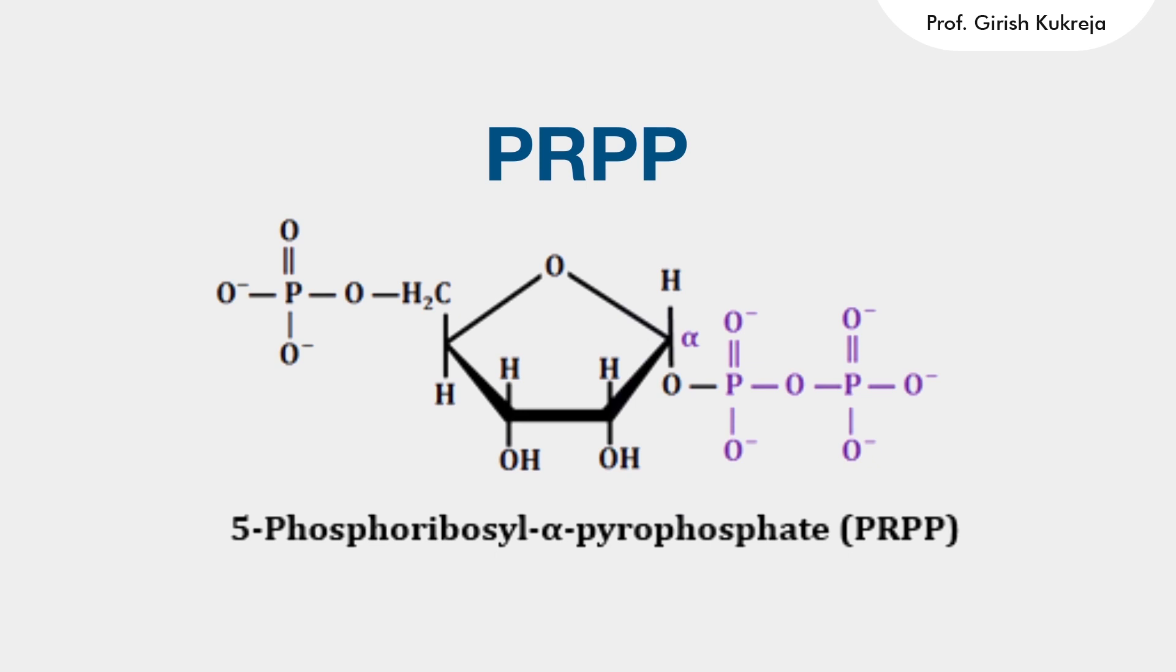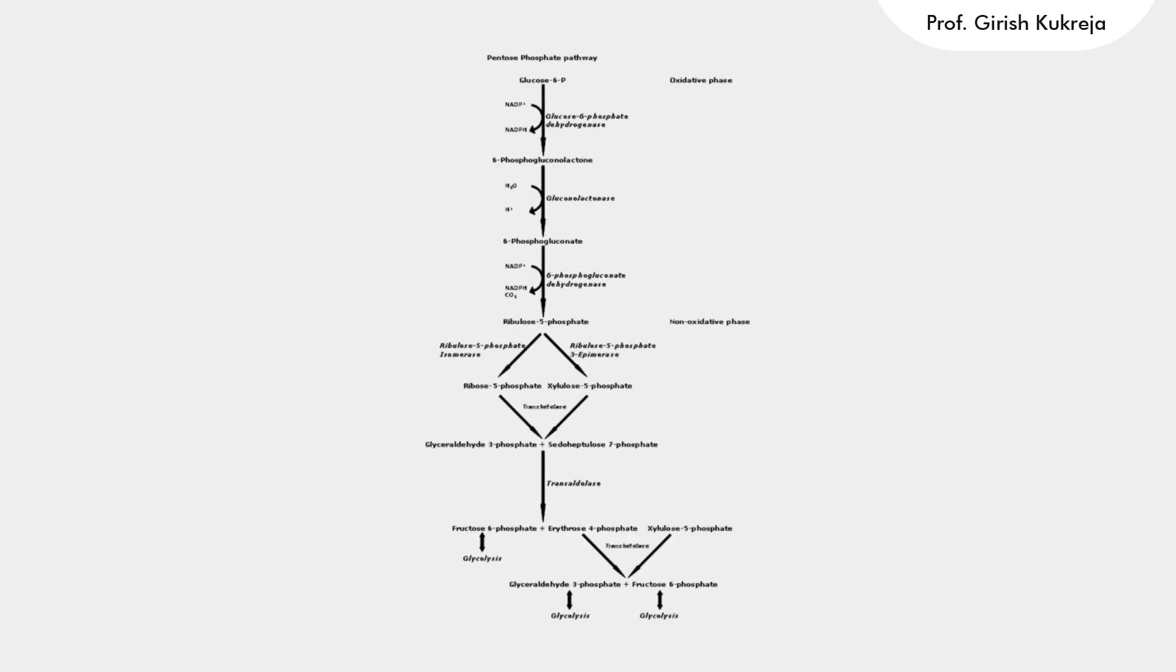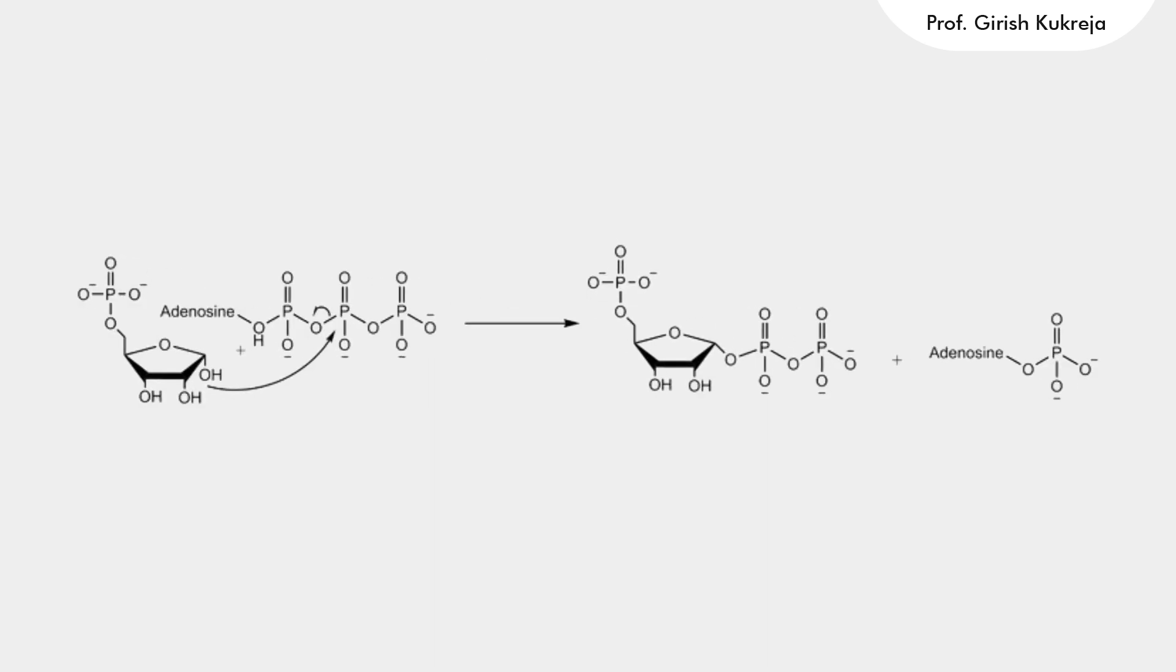This intermediate PRPP is derived from ribose-5-phosphate, which we obtain from the pentose phosphate pathway. The formation of PRPP is catalyzed by the enzyme ribose-phosphate pyrophosphokinase, which adds the pyrophosphate group from ATP to ribose-5-phosphate to form this intermediate.